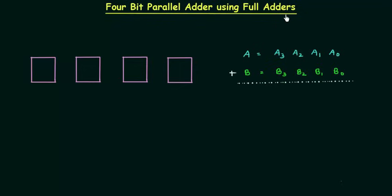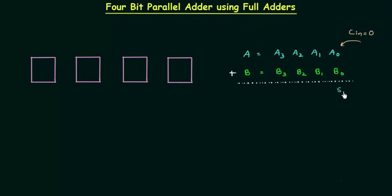Since we are using full adders, we can take carry from the previous sum. A0 and B0 are the two bits we are going to add, and we will consider the carry input CIN from the previous sum. As you can clearly see, this is the first sum, so CIN is equal to 0 for this first full adder. After the addition, S0 is the sum and C0 is the carry output.